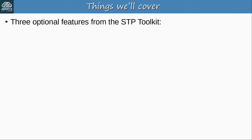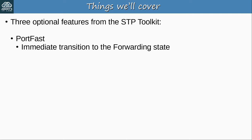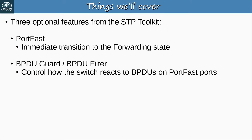We're covering three optional features from the STP toolkit. The first is PortFast, which allows ports to immediately transition to the forwarding state without the listening and learning states. Then we'll cover BPDU Guard and BPDU Filter, which both control how the switch reacts to BPDUs on PortFast-enabled ports.